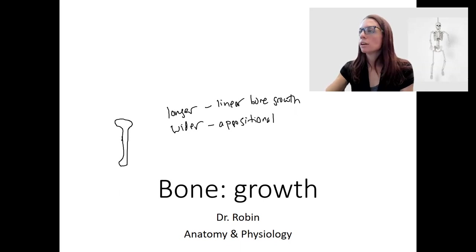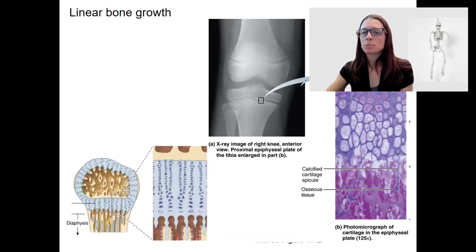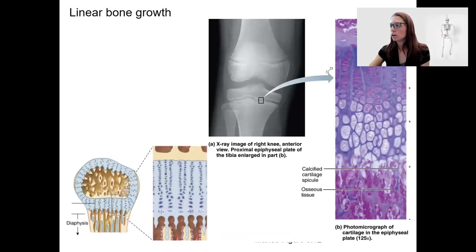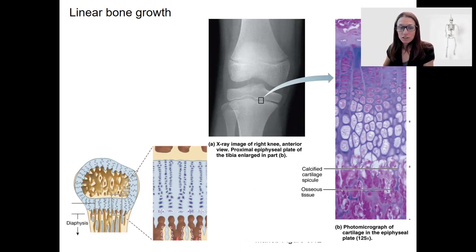Linear bone growth — this process is very similar to what occurs in endochondral ossification. We're forming bone tissue because the bone has to grow longer. One main difference is linear bone growth only occurs at the epiphyseal plates.